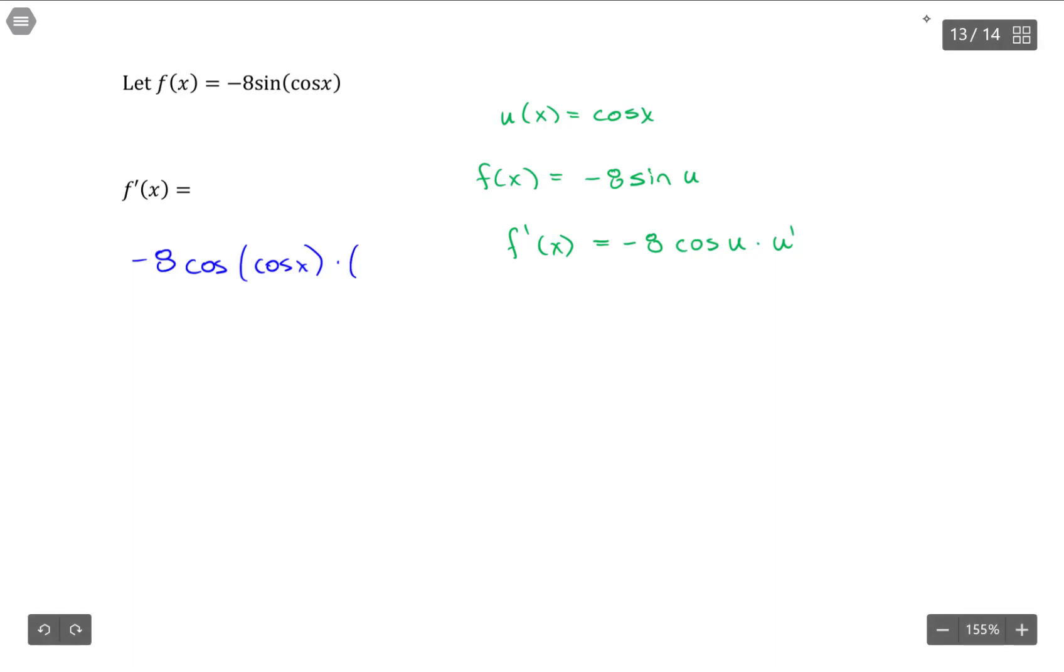So the derivative of cosine. The derivative of cosine is negative sine. So to simplify here, I will cancel out the negatives and make that a positive 8 sine x cosine of cosine x.